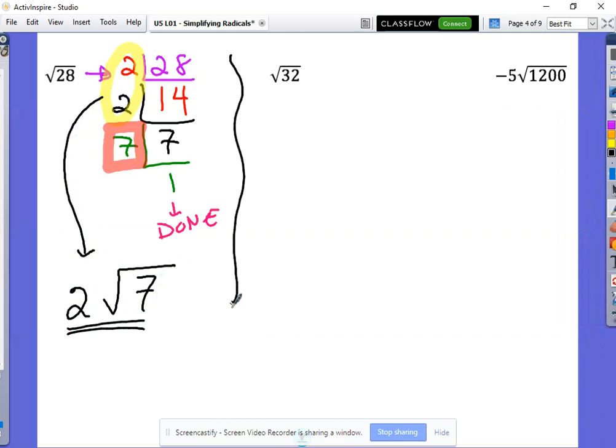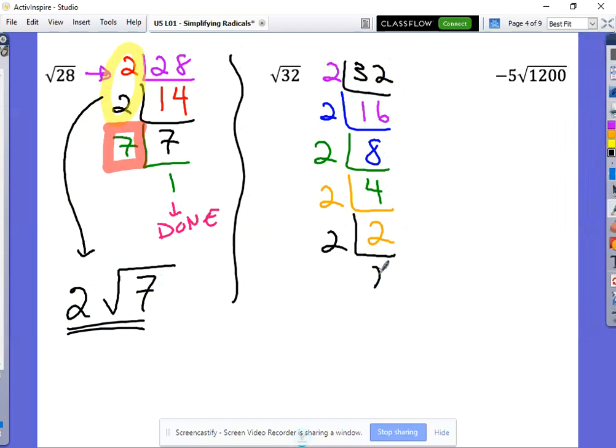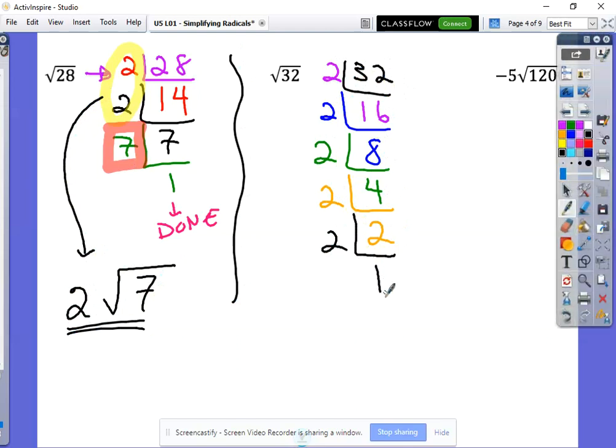Let's try another one here. Thirty-two goes on the inside. Smallest number that goes into thirty-two is two, leaves us with sixteen. Another two leaves us with eight. Another two leaves us with four. Another two leaves us with two. Two, and one more two, there's a ton of twos, and one more two leaves us with one. All right. So that means we're done.